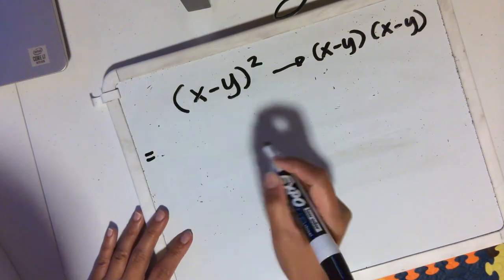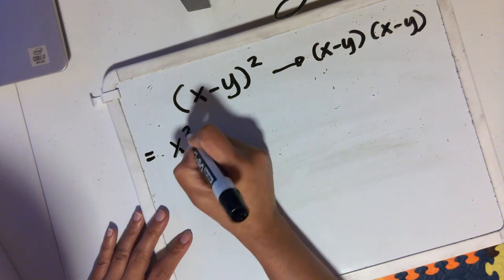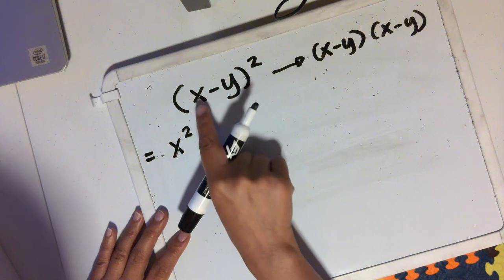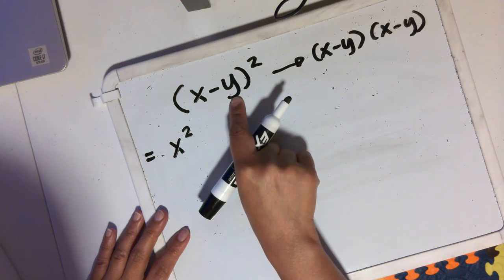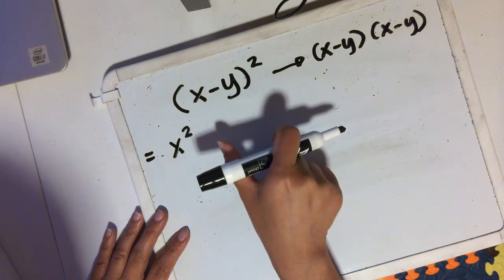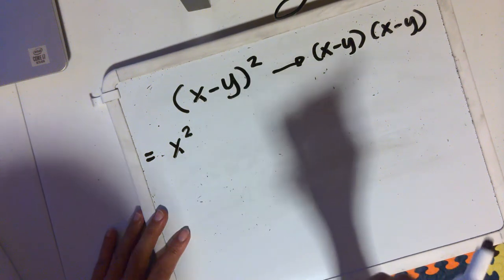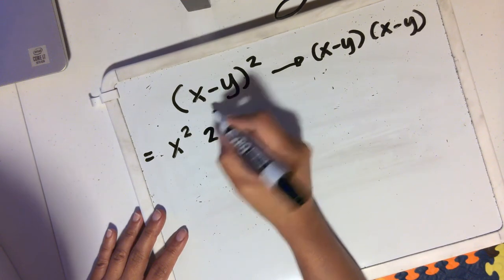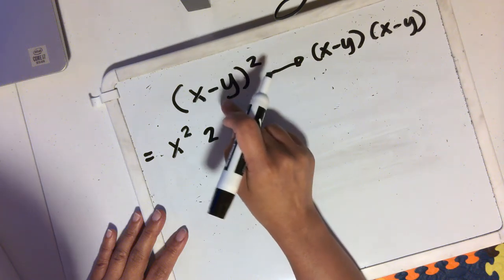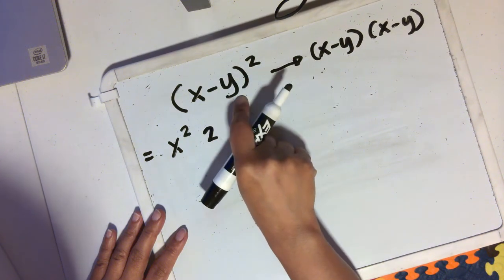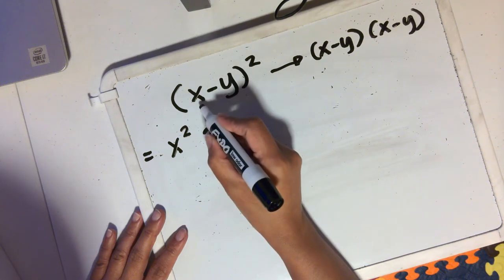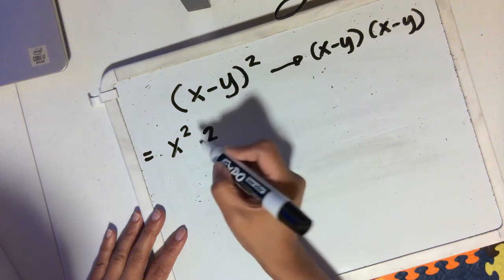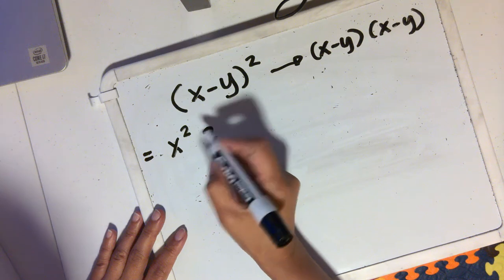To square a binomial, you square the first term — so this is x squared. And then you multiply the first and the last term, and whatever product you get after multiplying those two terms, you multiply the product by 2. So that means 2 times the product of x and negative y. Why negative y? Because this is minus. So x times negative y is negative xy, and then times that by 2, giving you negative 2xy.